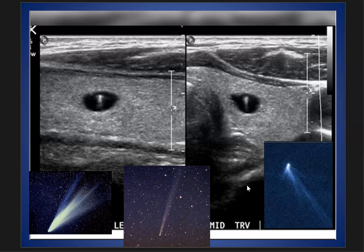So this is thyroid ultrasound — a recap: thyroid ultrasound with a hypoechoic area with comet tail artifact, representing a colloid cyst. We have mentioned some causes of comet tail artifact. Thank you for listening and hoping to see you soon in another talk.